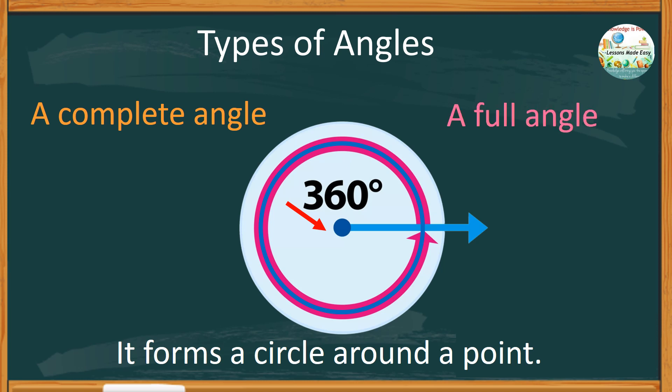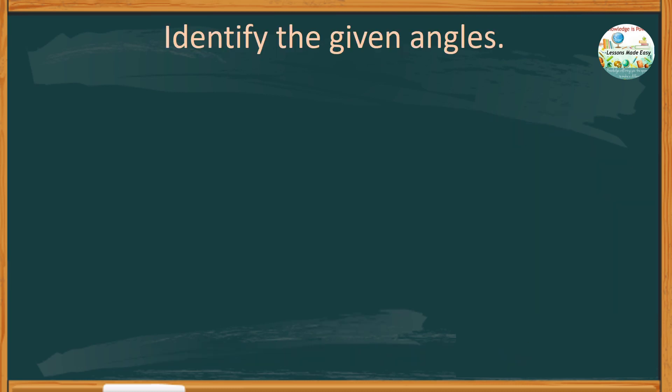It is exactly 360 degrees or double the size of a straight angle. Before we end this lesson, let's try to identify the given angles. Let's see how well you can tell what type of angle each figure represents.